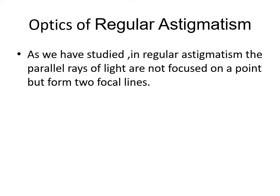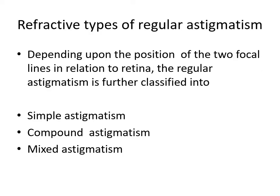Regarding the optics of regular astigmatism: parallel rays of light are not focused on a point but form two focal lines. The refractive types depend upon the position of the two focal lines, as seen with Sturm's conoid. There are three refractive types: simple astigmatism, compound astigmatism, and mixed astigmatism.